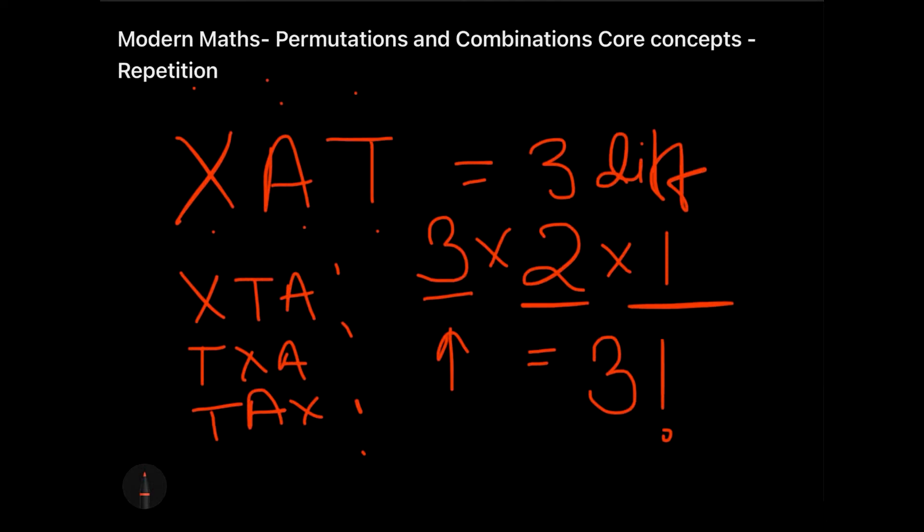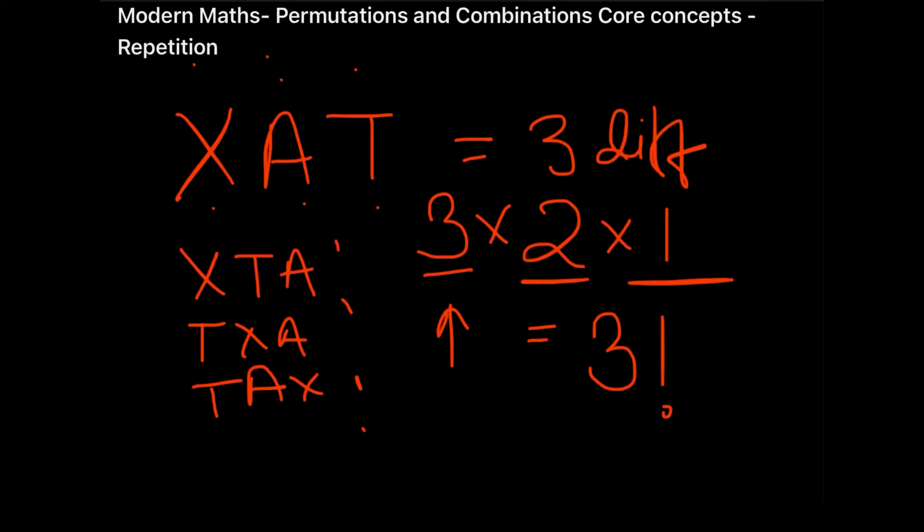But what happens when I say that I can repeat the letters? Here the condition was that I cannot repeat the letters. What if I say that out of X, A, T, I can write X three times also, I can write A three times also, I can write T two times also. Now this is a common sense question. If you are going to repeat it, of course the number of cases which you will be forming will be definitely more than 3 factorial, that is 6.